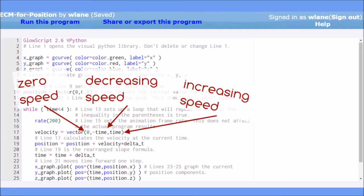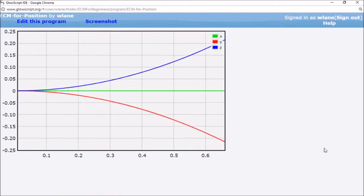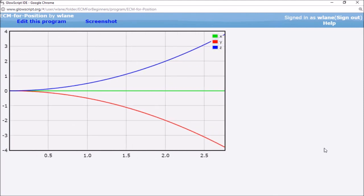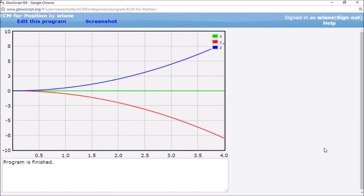As before, we can change these velocity components to be anything we like. Suppose we keep the x component and the z component the same, but make the y component decrease with time. This means that the y coordinate should do the opposite of whatever the z coordinate does. If we run the code, that's exactly what we see. An upward parabola for the z coordinate and a downward parabola for the y coordinate.